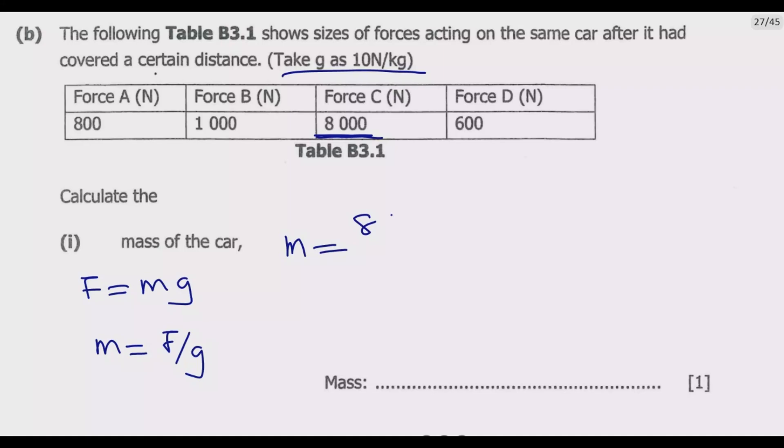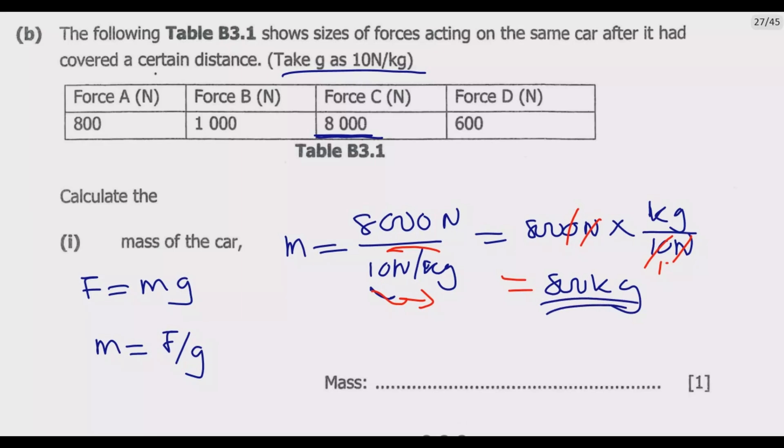Hence mass will equal 8000 newtons divided by 10 newtons per kg. This is the same as 8000 newtons multiplied by kg over 10 newtons. Because we are dividing, we introduce multiplication - these two swap. This one which was on top comes down, then this one goes up. Now you notice that these cancel, then we have 10 into 8 is 800, so the mass is 800 kg.